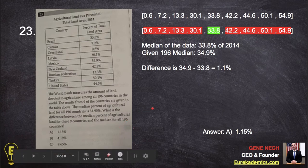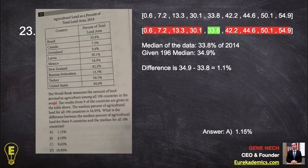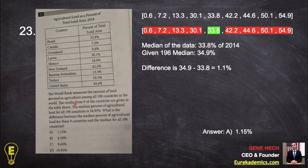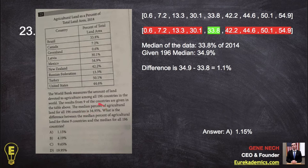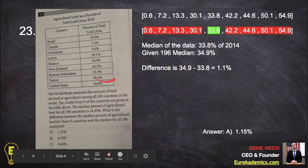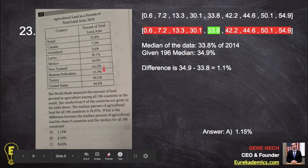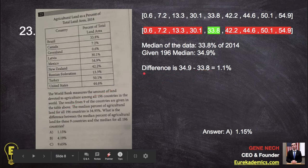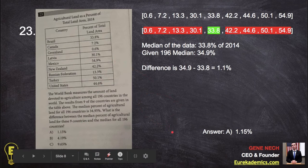Number 23. It's a statistics question. So the World Bank measures the amount of land devoted to agriculture among all 196 countries in the world. The results from nine of the countries are given in the table above. The median percent of agricultural land for all 196 countries is 34.95. So that represents all 196 countries. We're only looking at nine of that, a very small fraction. And they're asking us, what is the difference? Again, that difference question. That means we have to subtract something in the end.